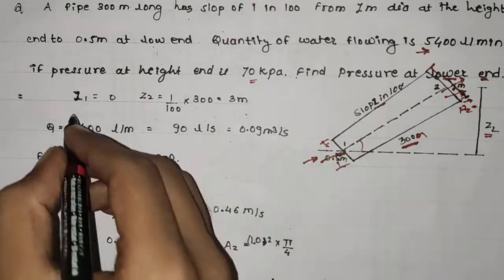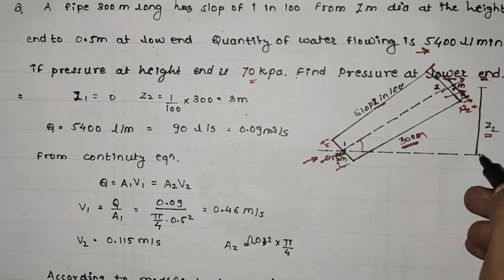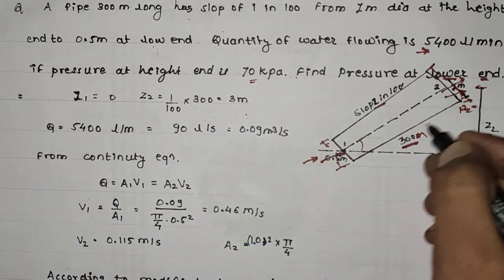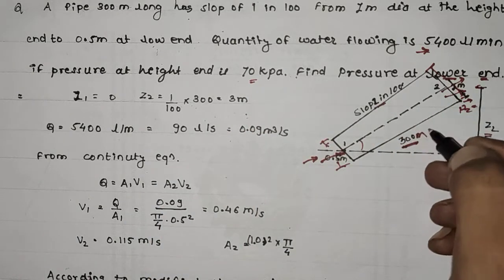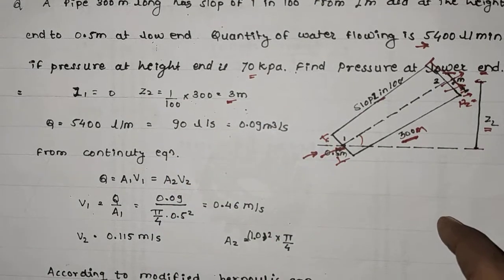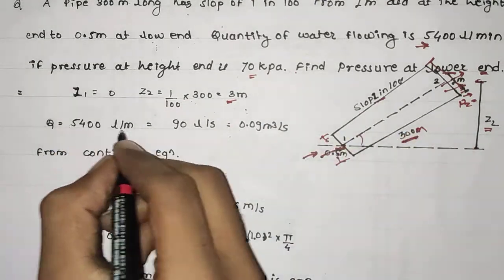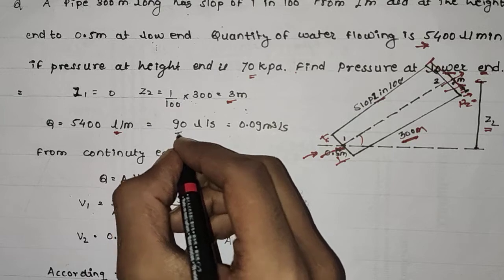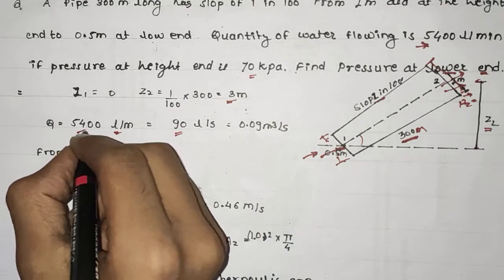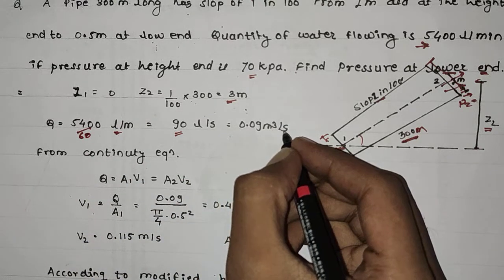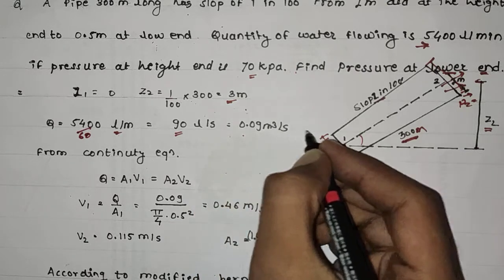Z1 is the height from the ground surface — let the lower end be the ground surface, so Z1 = 0. Z2 equals the total length of 300 meters multiplied by the slope of 1/100, giving Z2 = 3 meters. The quantity of flow is given in liters per minute and is converted to SI units: Q = 0.09 m³/s.